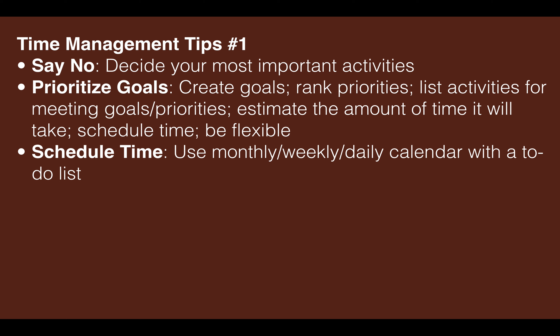Here are a series of time management tips to consider for your educational priorities. First, just say no — decide your most important activities and say no to the ones that are less important. Second, prioritize your goals: create goals, rank the priorities, put the more important ones on top and the less important ones towards the bottom.